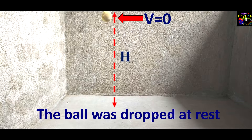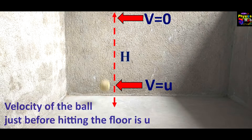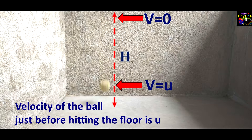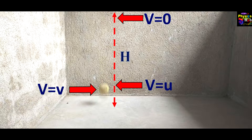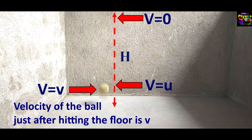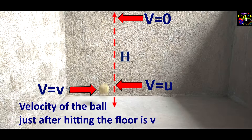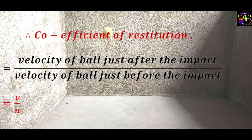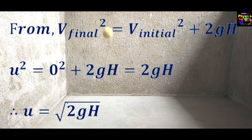The ball was dropped at rest. Velocity of the ball just before hitting the floor is u, and velocity of the ball just after hitting the floor is v. Coefficient of restitution equals velocity of ball just after the impact divided by velocity of ball just before the impact.